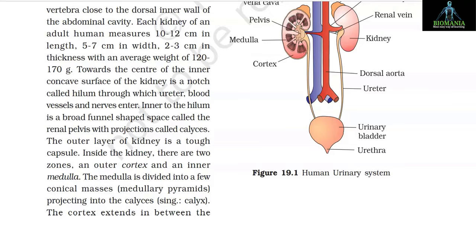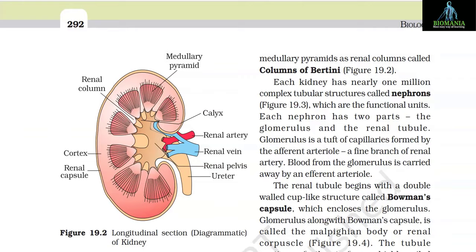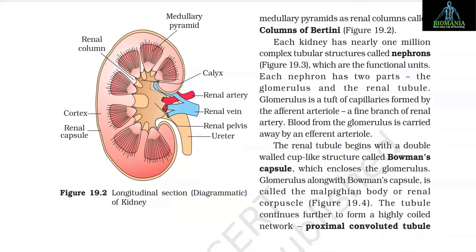Towards the center of the inner concave surface of the kidney is a notch called the hilum, through which the ureter, blood vessels, and nerves enter. Inner to the hilum is a broad funnel-shaped space called the renal pelvis with projections called calyces. The outer layer is a tough capsule. Inside the kidney there are two zones: an outer cortex and an inner medulla. The medulla is divided into conical masses called medullary pyramids projecting into the calyces. The cortex extends between medullary pyramids as renal columns called columns of Bertini.